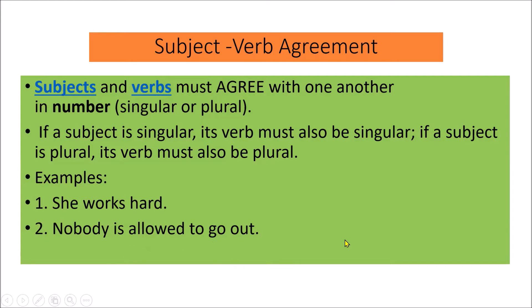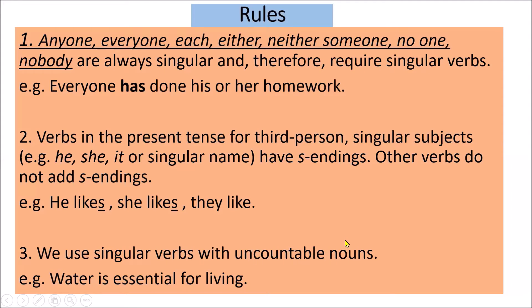Now there are a few rules which we need to follow while learning subject-verb agreement. There are a few words — anyone, everyone, each, either, neither — which are always singular and therefore require singular verbs. So all these words are singular, and that's why we use a singular verb with them.